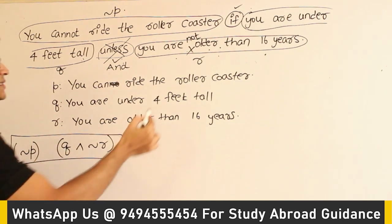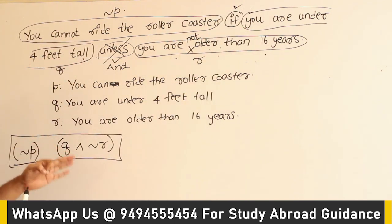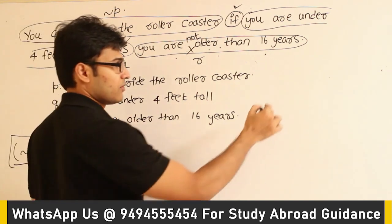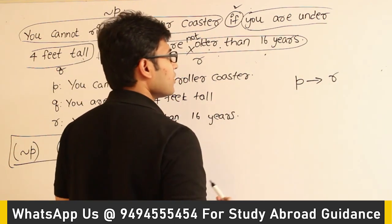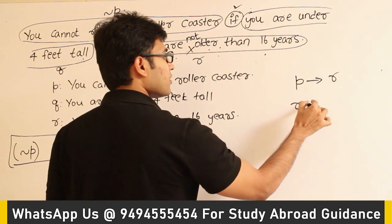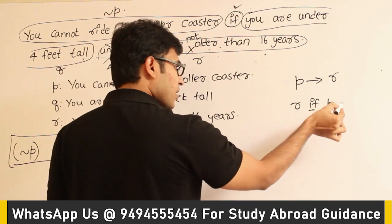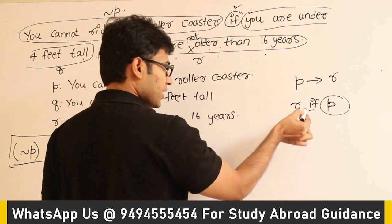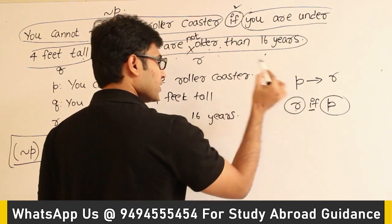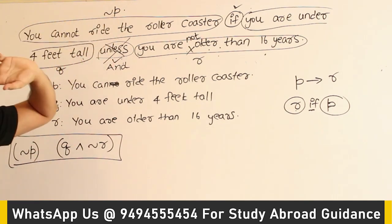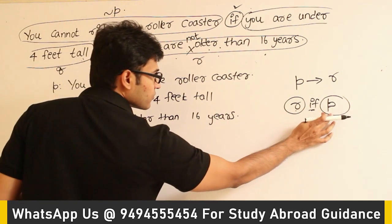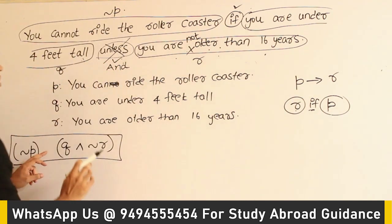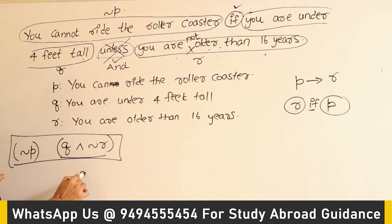Now, how to connect them? There is 'if' given. If you watch the ways in which we have represented an implication — if you have hypothesis implies conclusion, one way of writing it is: conclusion, if hypothesis. So what does it mean? After the 'if' part, whatever you have is the hypothesis. And before the 'if' part, whatever you have is the conclusion. With practice you will be able to understand it. So, whatever is after 'if' is going to form the hypothesis. Therefore, Q ∧ ¬R is going to form the hypothesis.